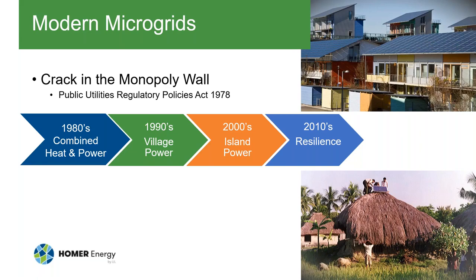The first crack in the monopoly wall in the US was PURPA — the Public Utility Regulatory Policy Act of 1978, which also happens to be the year I graduated from college. In the 1980s, PURPA kicked off cogeneration — combined heat and power — and wind farms. In the 1990s, joining NREL, we created the Village Power Program in response to the Earth Summit in Rio in 1992, exploring how to help developing countries provide energy access to billions of people who lacked it.